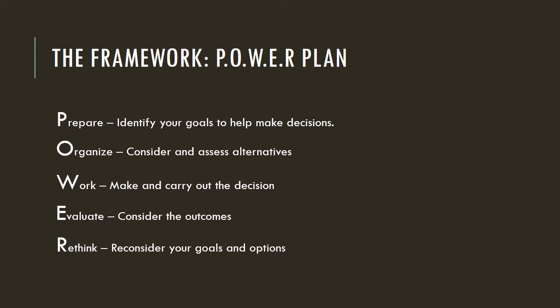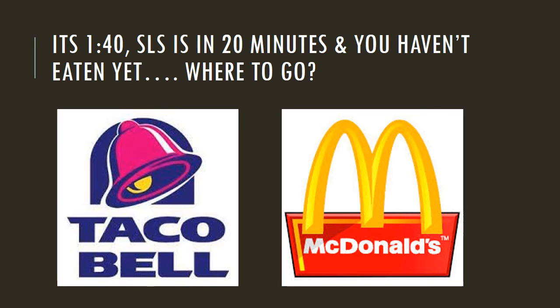If you're just trying to decide what you want to eat, you probably don't have to go through all these steps — but it wouldn't hurt. For example: SLS is in 20 minutes, you're starving, and it's Taco Bell or McDonald's. Taco Bell's closer, but you're going on a date tonight and might not want to be running to the bathroom every 10 minutes. Taking that into consideration, you might want to go with McDonald's. Even with small decisions, systematically thinking through the alternatives can definitely pay off.